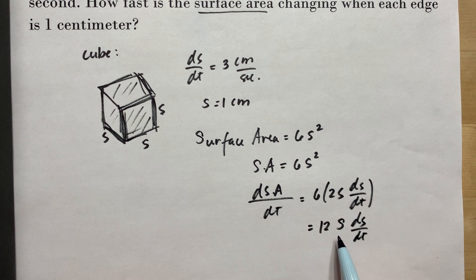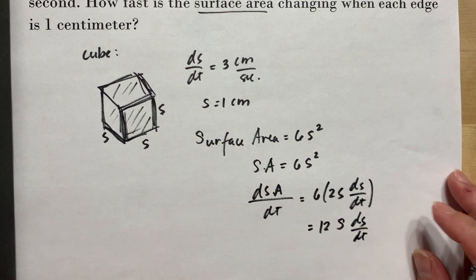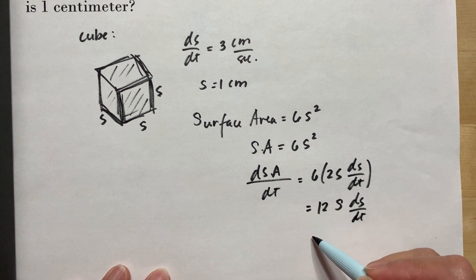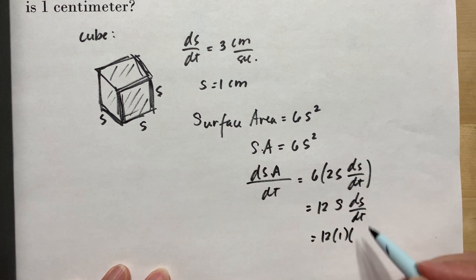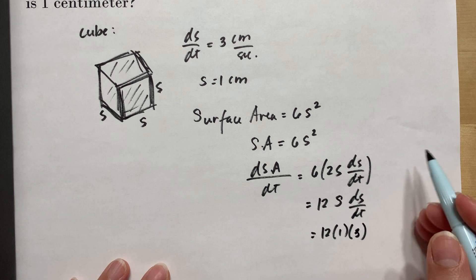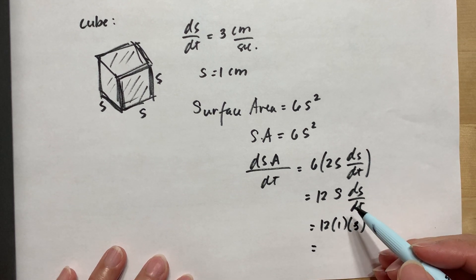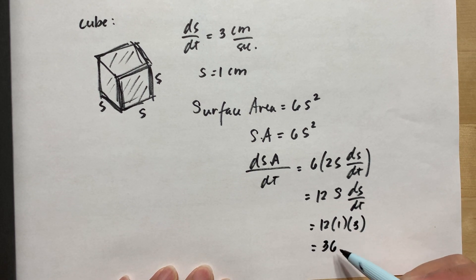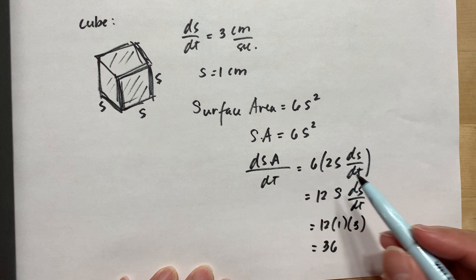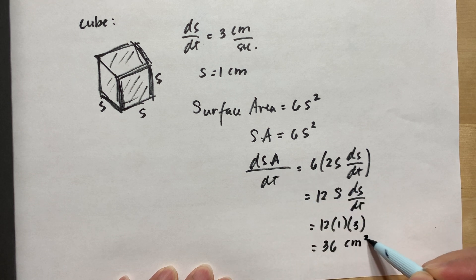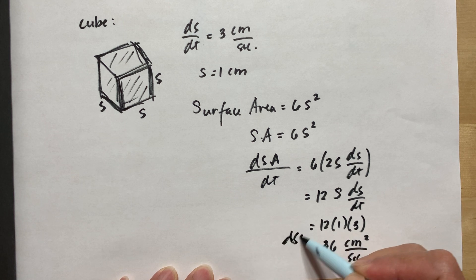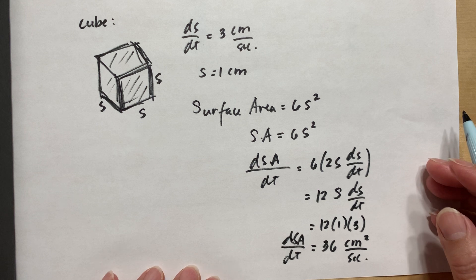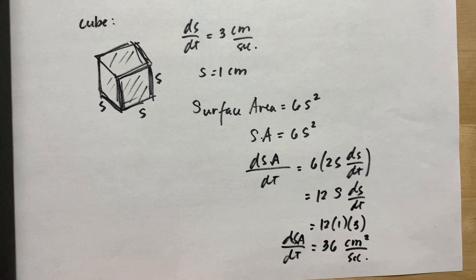And our side is 1 and dS over dt is 3. We need to substitute. 12 multiplied by 1 multiplied by 3, which is the dS over dt. Meaning this is equal to 36. And it is a surface area, so it will be centimeters squared over seconds. This is the rate of change of our surface area.